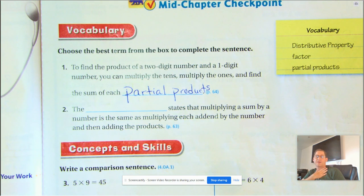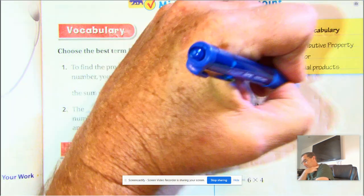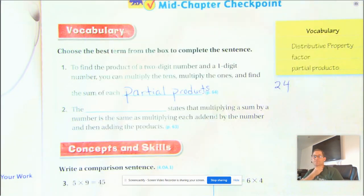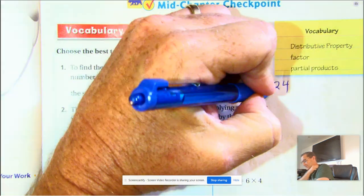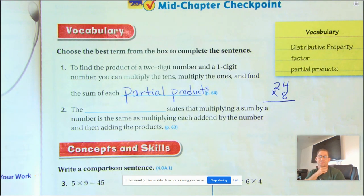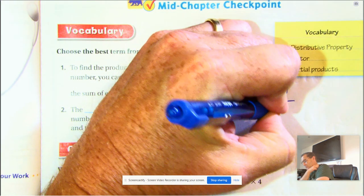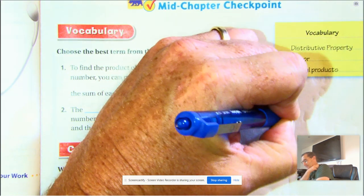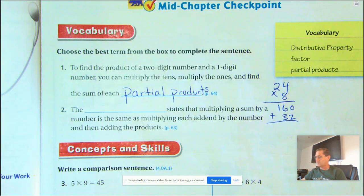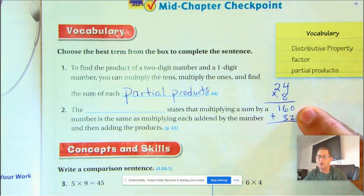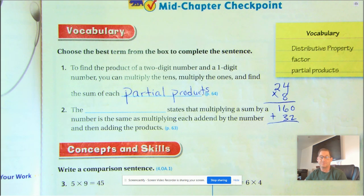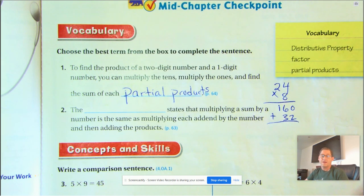You can multiply a two-digit number, let's say 24, and a one-digit number, such as 8. And we can multiply the tens, multiply the ones. So 8 times 2 tens would be 160, plus 8 times 4 ones, 32. So yeah, these here are partial products. Okay. So we're going to add those up to get the product for that number.